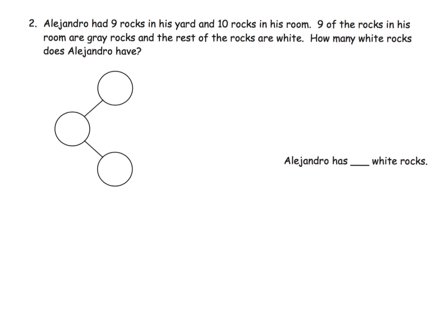Another practice example, we're back to the horizontal number bond here. It says Alejandro had 9 rocks in his yard and 10 rocks in his room. Yard, room, 9 of the rocks in his room are gray and the rest of the rocks are white. How many white rocks does he have?